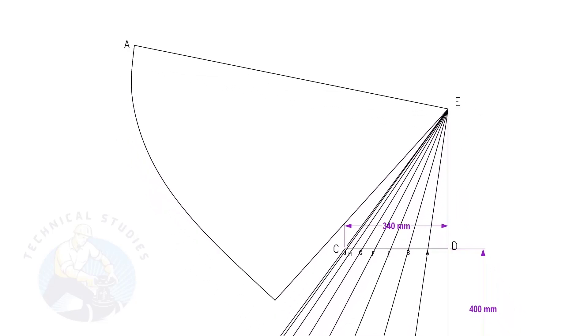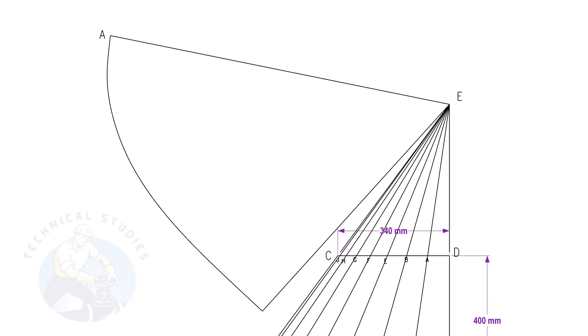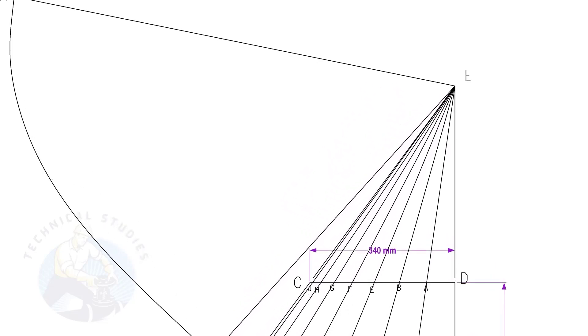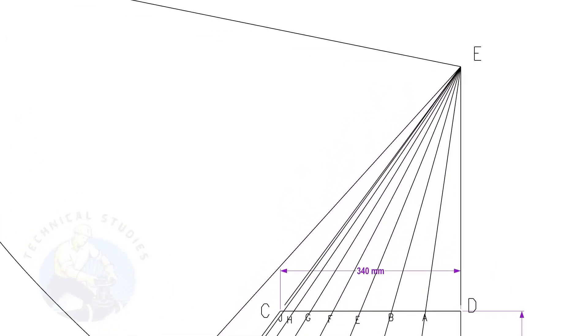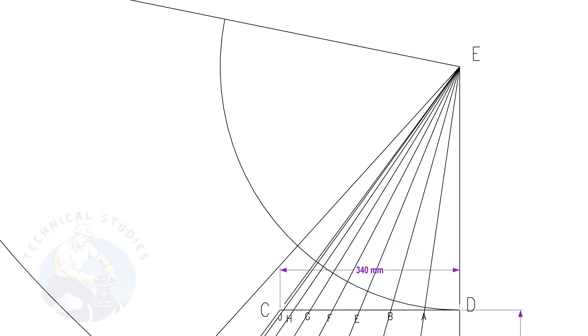Let us draw the top portion of the cone. The procedure is similar to that of the bottom side. Draw arcs ED, EA, EB, etc.